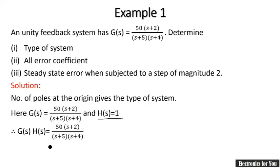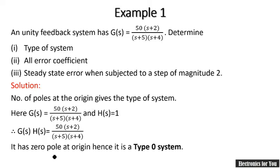To find the type of system, we look at the number of poles at origin — specifically, the power of s in the denominator. Here, no standalone 's' term is present in the denominator, which means the power of s is 0. Therefore, the number of poles at origin is 0, and this is a Type 0 system.